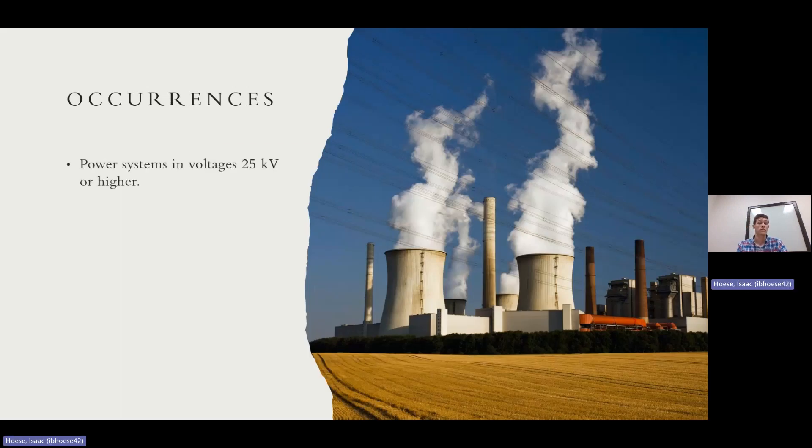Occurrences. So where does ferroresonance occur? Obviously, we said power systems. Most of the time it's 25 kV or higher. It has been known to happen in 12 kV systems as low as that, but the scenario has to be just right for that to happen.